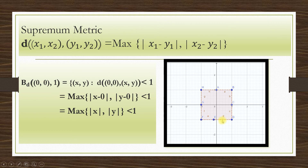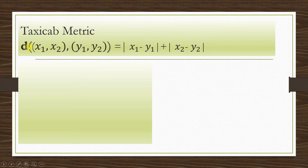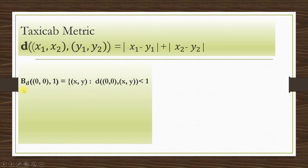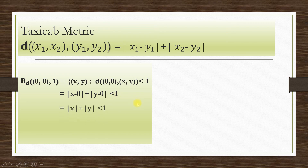Here also the boundary points are excluded. The last example is the taxicab metric, defined as d((x1, y1), (x2, y2)) = |x1 − x2| + |y1 − y2|, that is, we add the horizontal and vertical components. The open ball B((0,0), 1) equals the set of all (x, y) such that d((0,0), (x,y)) < 1, which by the taxicab metric definition equals |x| + |y| < 1.